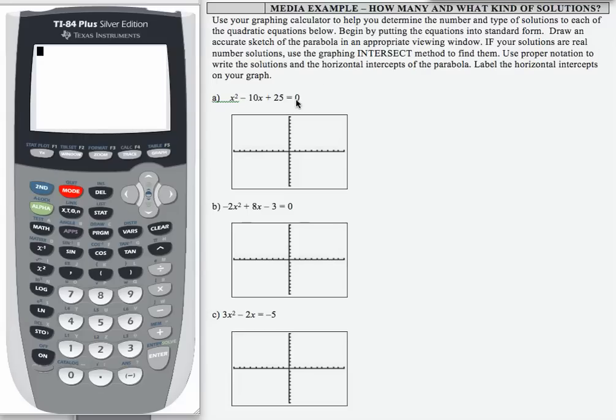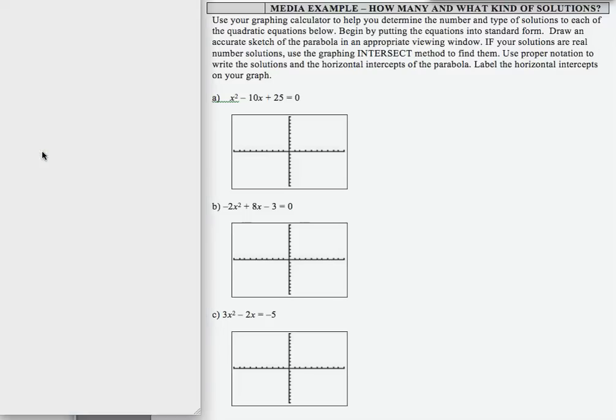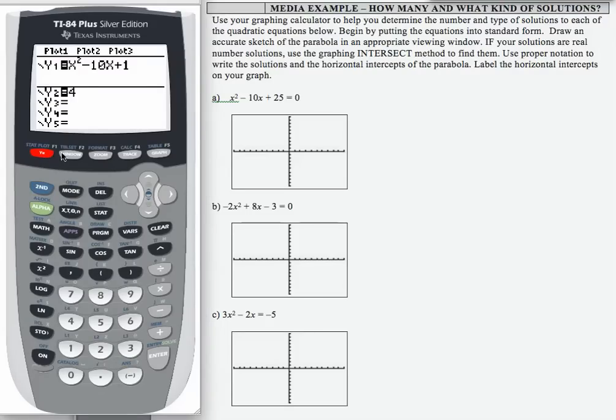Anytime you have a quadratic equation that you're asked to solve, even if you're not asked to graph it first, I recommend that you start by graphing. So go to your y equals, clear out anything you have in y1 and y2, and in y1, enter x squared minus 10x plus 25. In y2, enter 0.